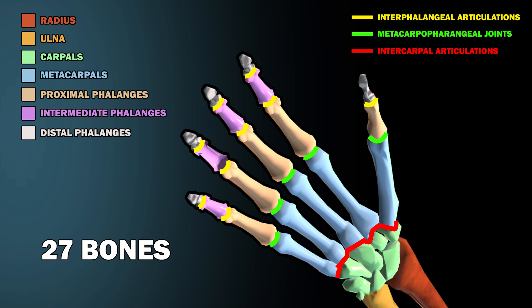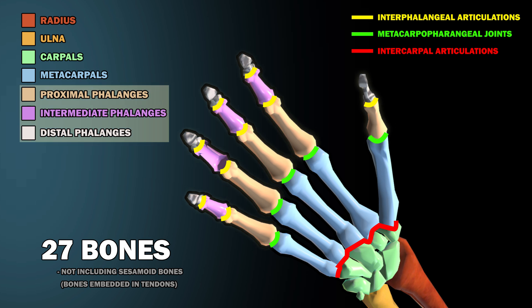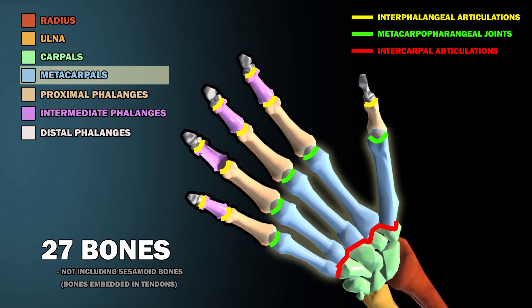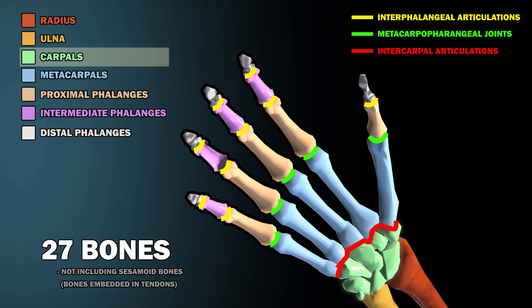The hand is made up of 27 bones, not including the sesamoid bones, or bones embedded in tendons. These 27 bones can be divided amongst three groups: the phalanges, the metacarpals, and the carpals.